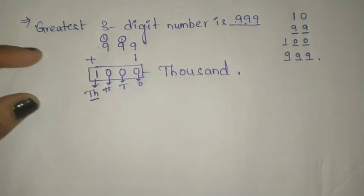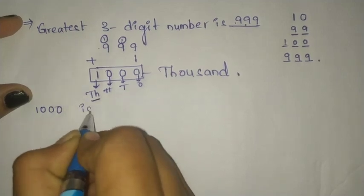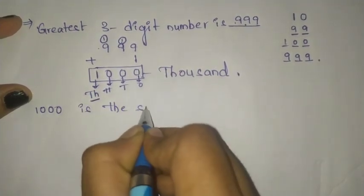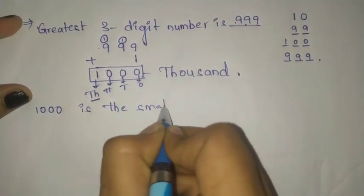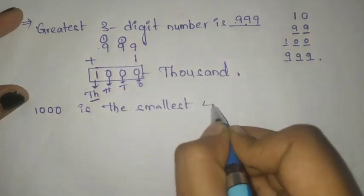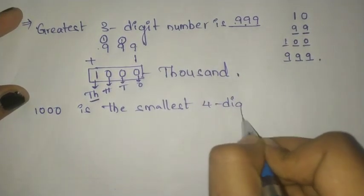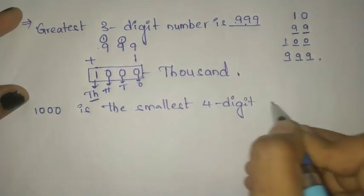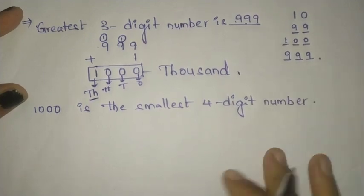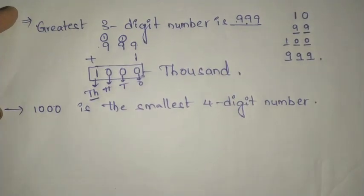This 1000 is the smallest four digit number.